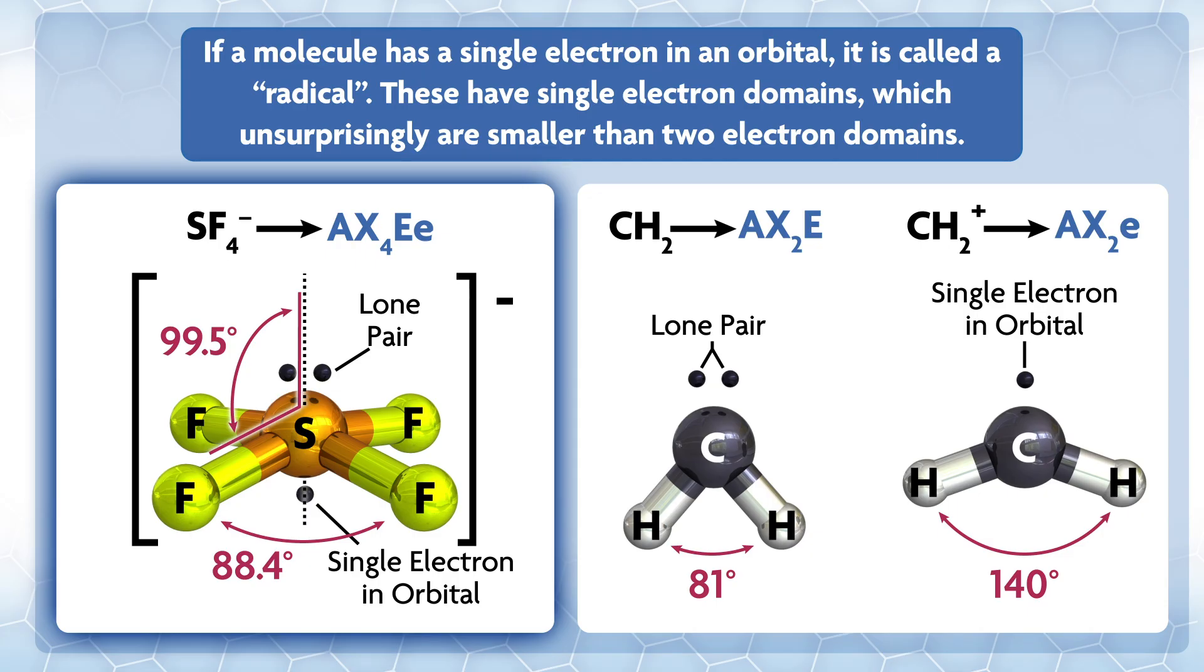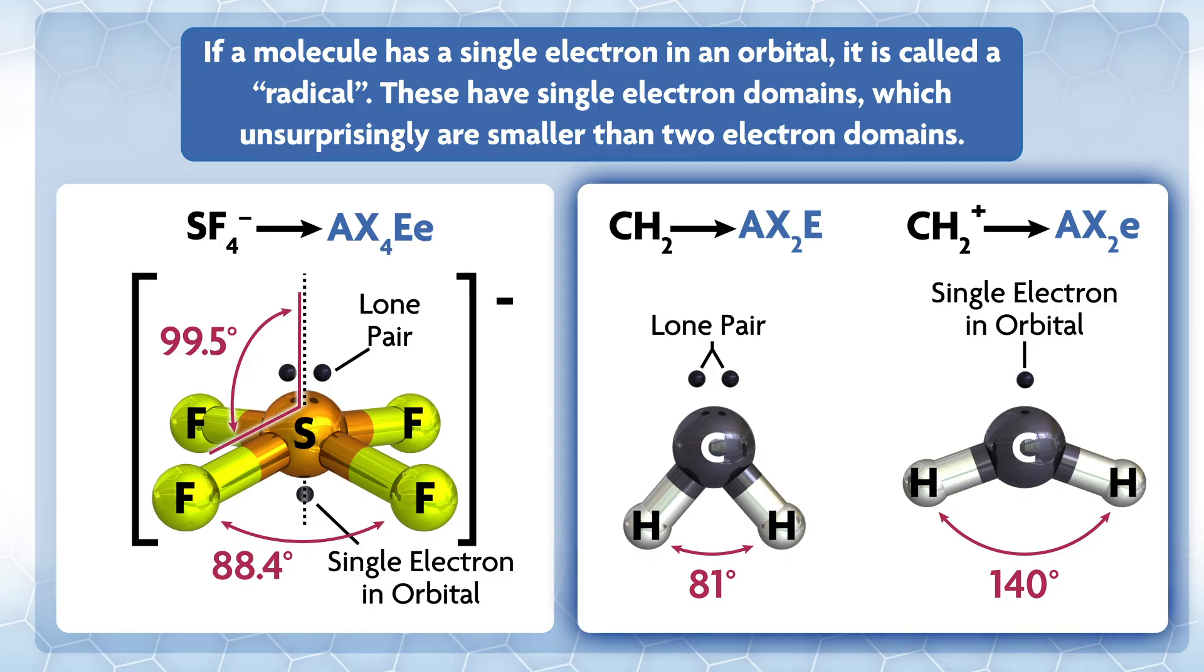One nice example is SF4 anion, which has both a lone pair and a radical. We might write its VSEPR formula like AX4 big E little e, where the little e is for the radical domain. There are six domains total, so the base structure is octahedral. We place the lone pair in one of these positions, but then we still have to decide what's next to it - F or e. In this case, the fluorines are in the plane next to the lone pair and get pushed downward towards the small one-electron domain.